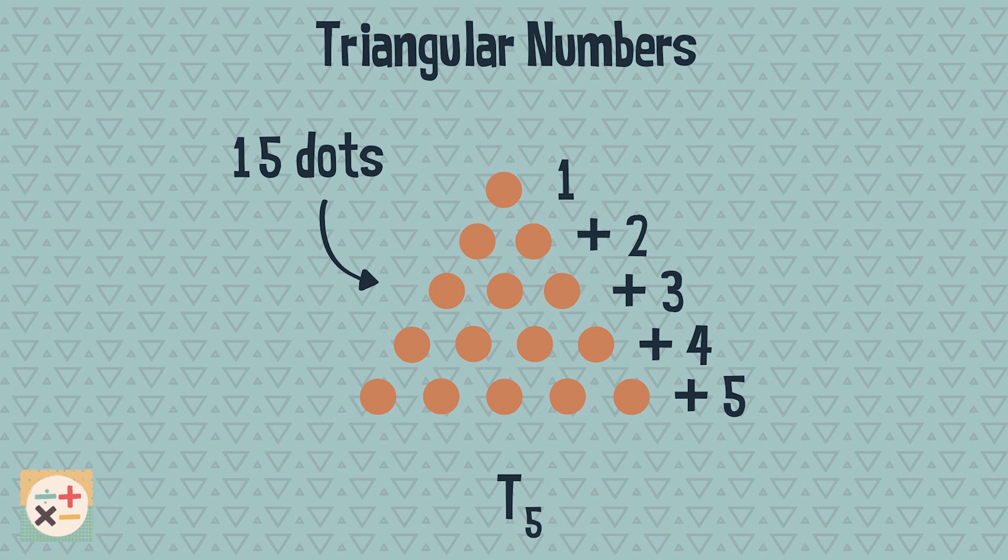Each triangular number is calculated this way. So for the sixth triangular number we add six to the fifth triangular number.